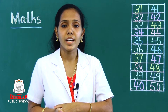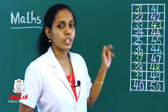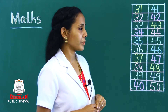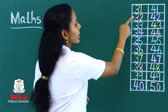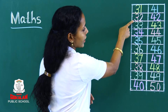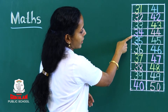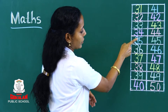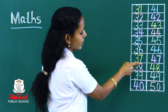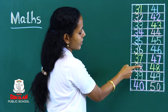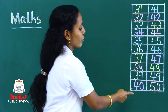But before we do that, let's count numbers 31 to 50. Let's start: 31, 32, 33, 34, 35, 36, 37, 38, 39, 40.